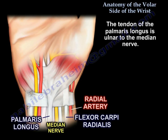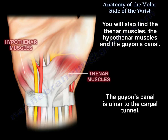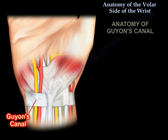The tendon of the palmaris longus is ulnar to the median nerve. Medial to the carpal tunnel you will find the ulnar artery, the ulnar nerve, and the flexor carpi ulnaris from lateral to medial. You will also find the thenar muscles, the hypothenar muscles, and Guyon's canal. Guyon's canal is ulnar to the carpal tunnel.